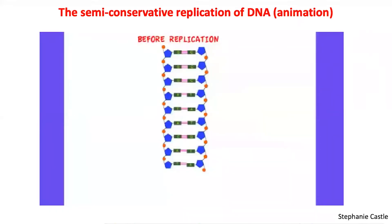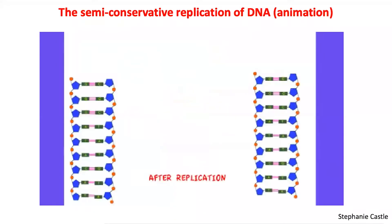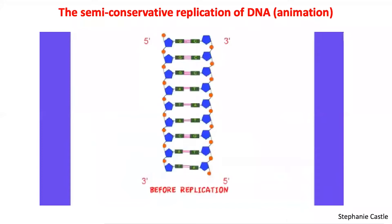DNA replication is the process by which one DNA molecule is duplicated to make two identical DNA molecules so that the next generation of cells can contain the same genetic information. To understand how DNA replication takes place, we first need to remind ourselves of the structure of DNA with regards to the prime ends. DNA is double-stranded and the right-hand strand is anti-parallel to the left-hand strand. Each of these strands undergoes DNA replication in a slightly different fashion, so I'll deal with each one individually.